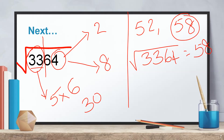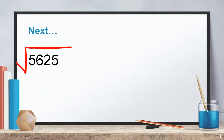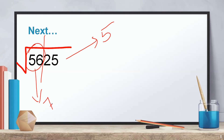To increase your speed, do these practice questions along with me and try to beat me in time — aim to solve in three seconds or less. Next: √5625. The question ends with 5, so the answer ends with 5. First pair is 56; the perfect square below 56 is 49, which is 7². Since there is only one option ending with 5, the answer is 75. √5625 = 75.